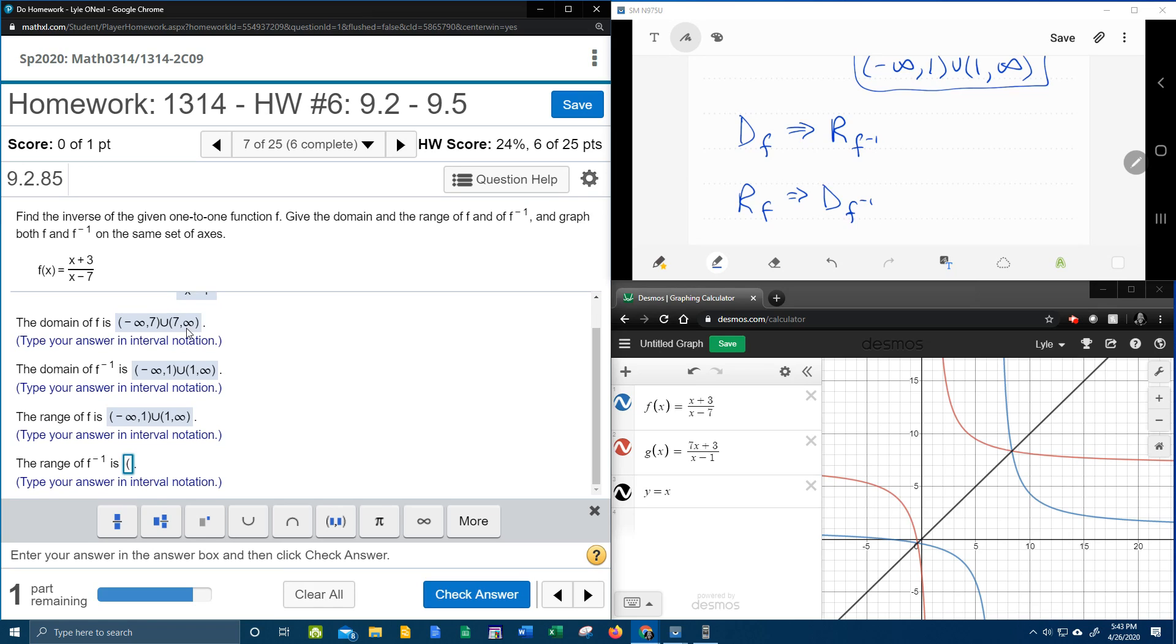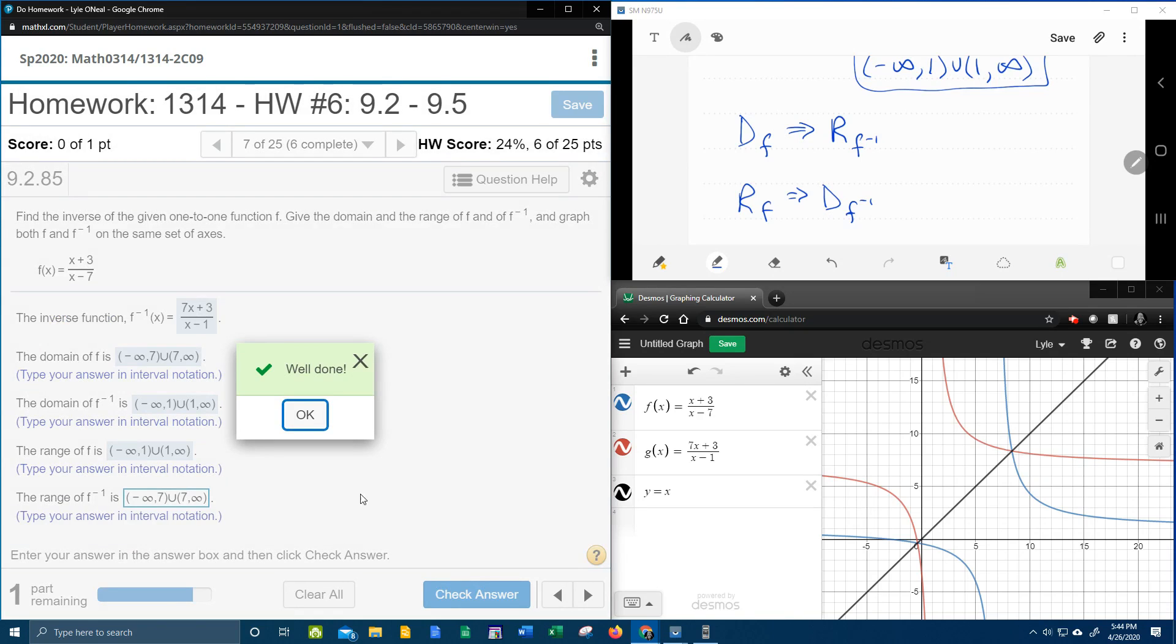And the range of the inverse is the domain of the original. So that's going to be negative infinity up to 7, and then everything from 7 to infinity.